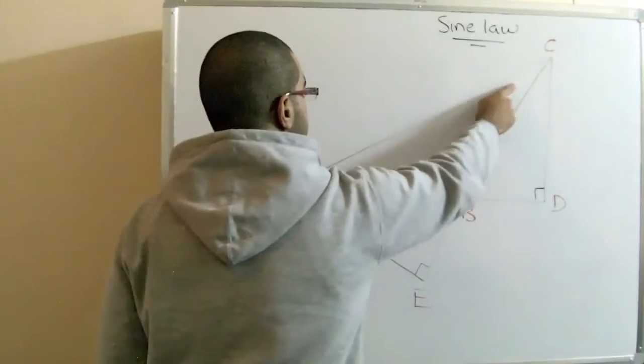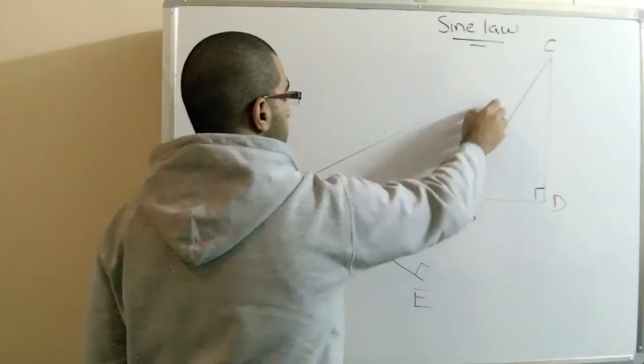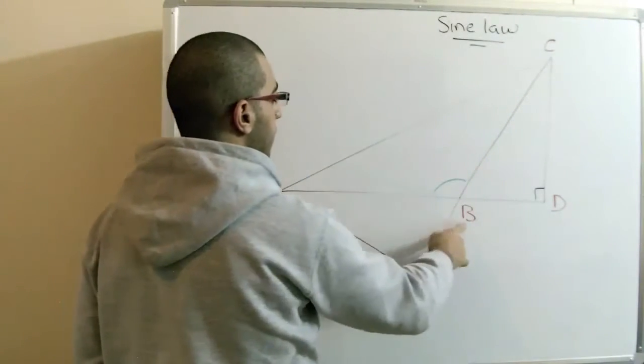So this is the obtuse angle triangle that we are dealing with, the triangle ABC.